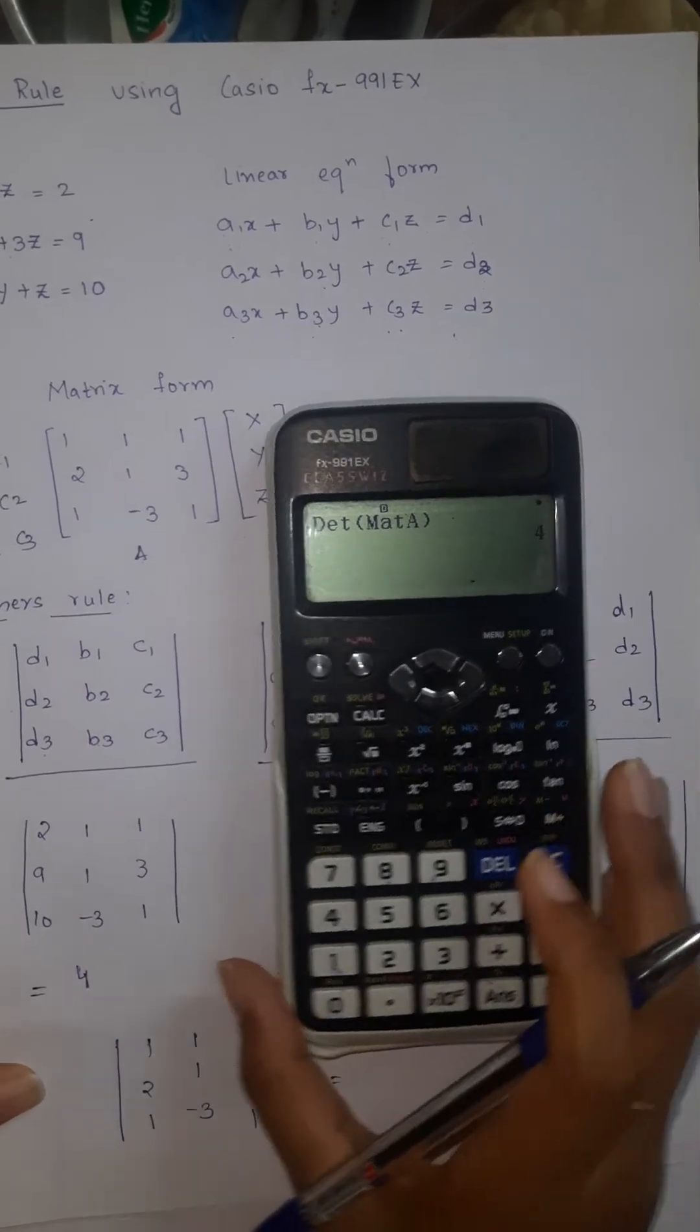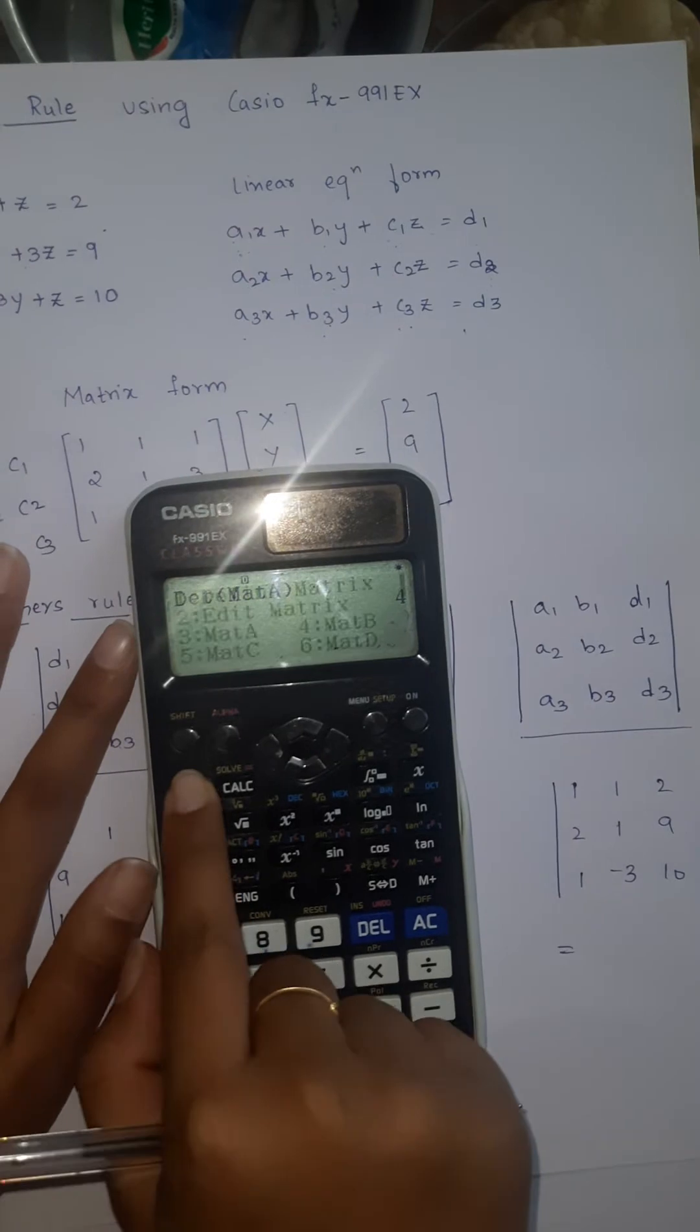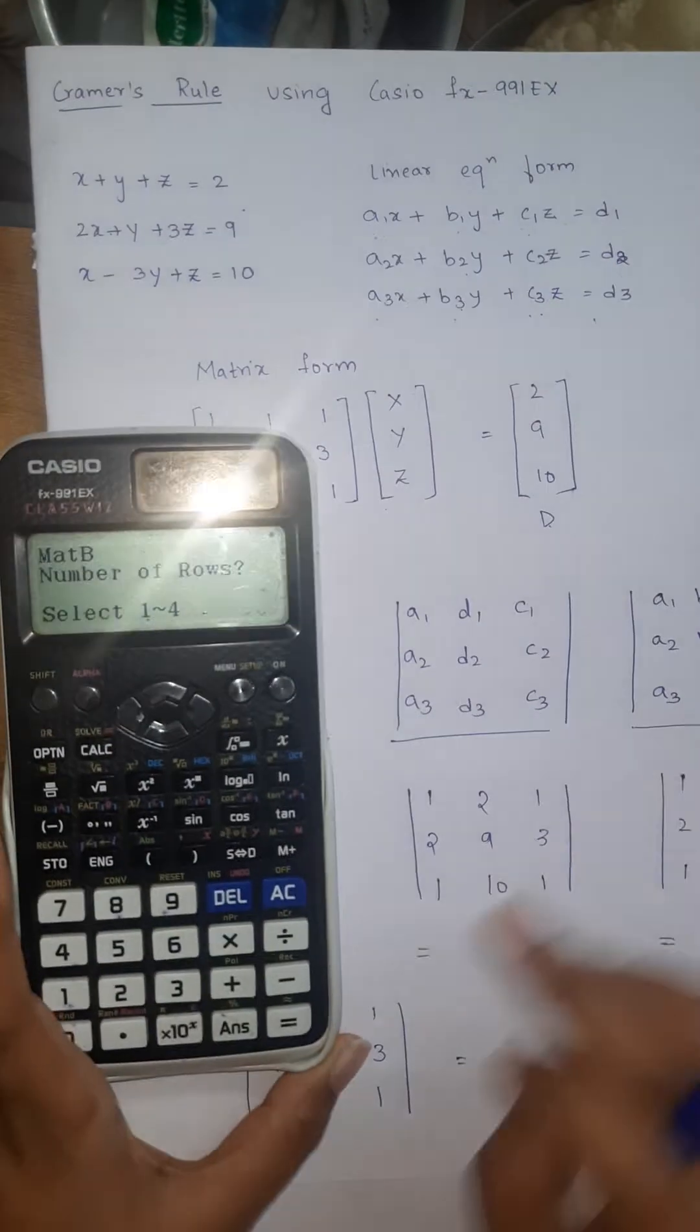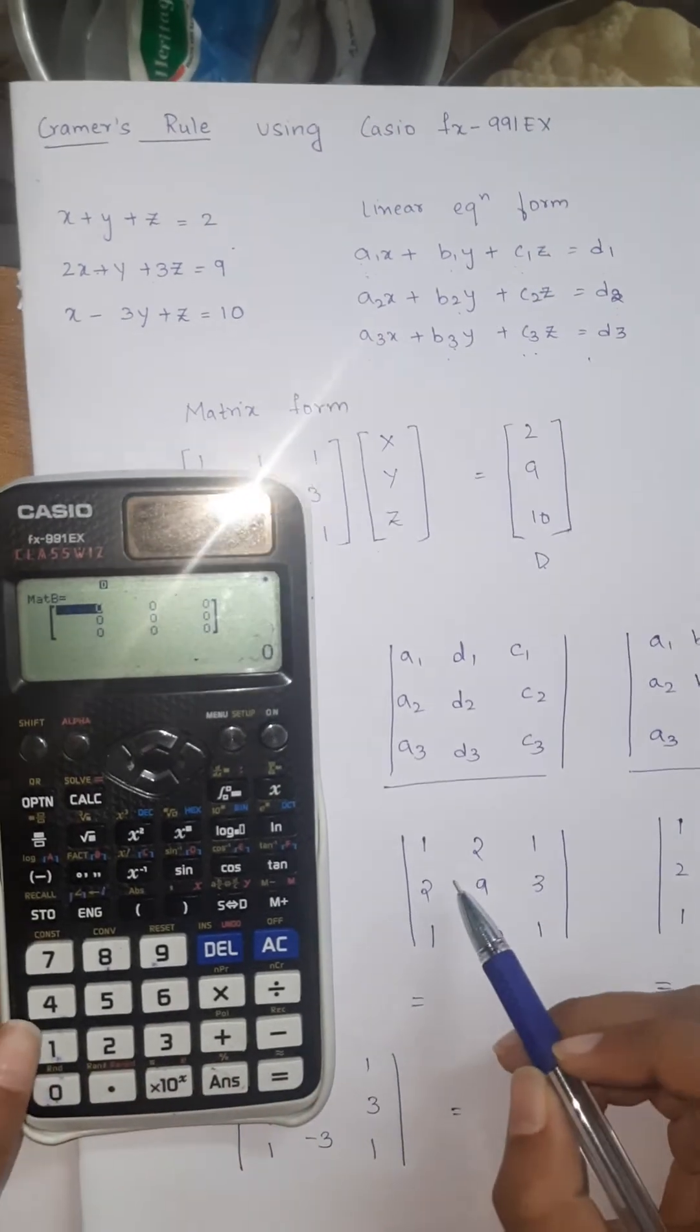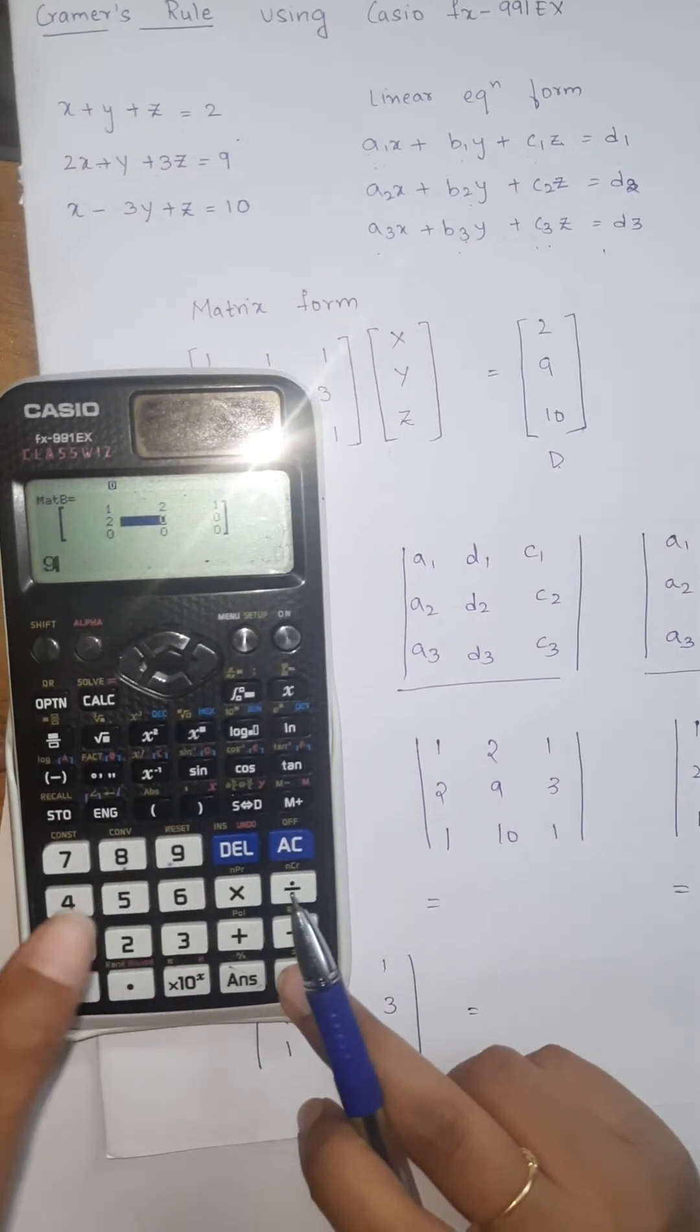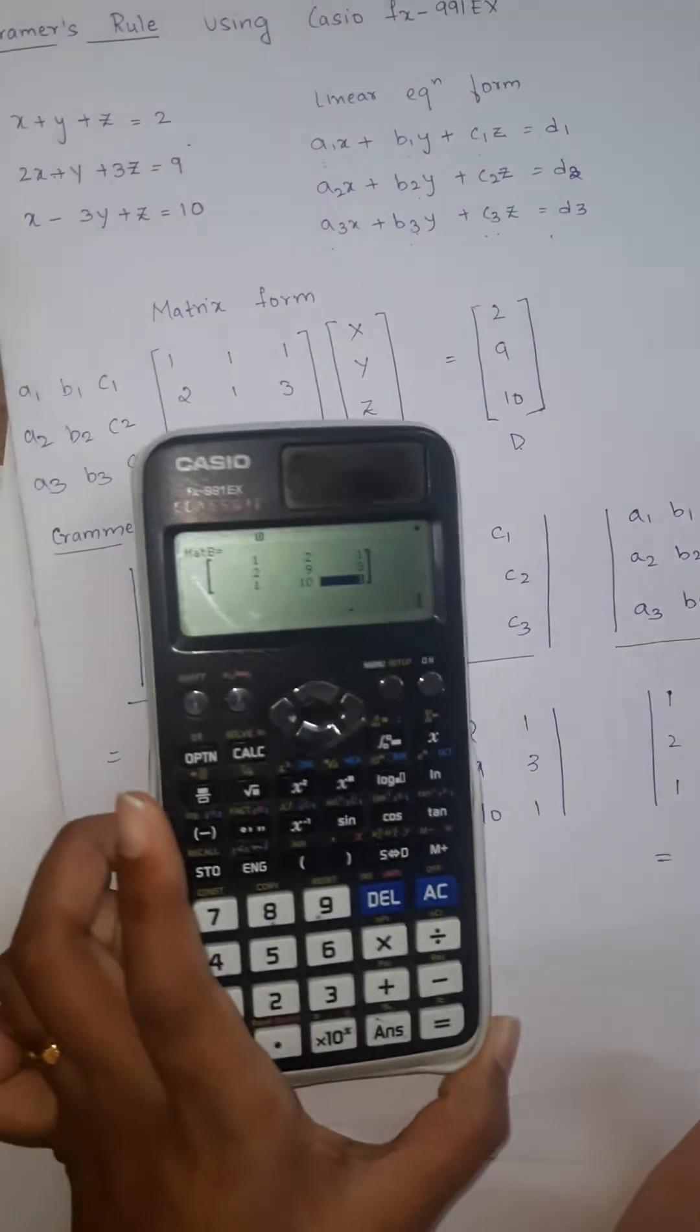Same thing again, but we should define other matrices. Click on option, define a matrix. We are defining matrix B. Number of rows and columns are 3. Defining the matrix: 1 equals 2 equals 1 equals 2 equals 9 equals 3 equals 1 equals 10 equals 1. Definition part is done.